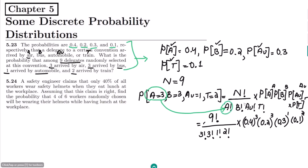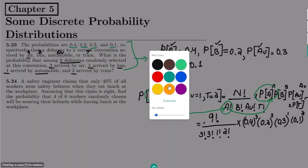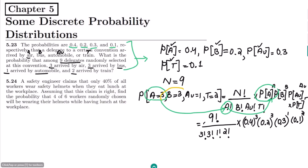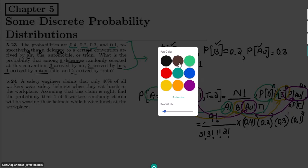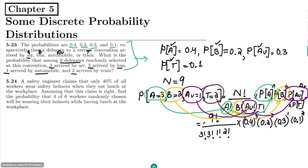Let me represent each item with a different color to make it easy to follow. This is A with its factorial and probability. In yellow, this is B with its relevant probability. The third item AU is here with its probability, and finally T in brown has its factorial and relevant probability. This is the multinomial probability where n factorial represents the total number of items.